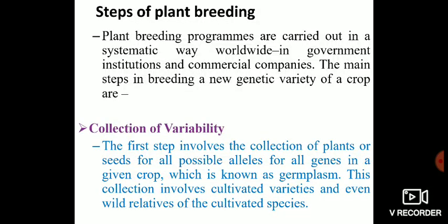Hello everyone and welcome back. Today we are going to discuss the different steps of plant breeding. Plant breeding is the science of getting new genetic varieties of crops, and it is not a single-step process. It is a multi-step process in which different steps are carried out in a systematic, ordered way in government institutions and commercial companies.